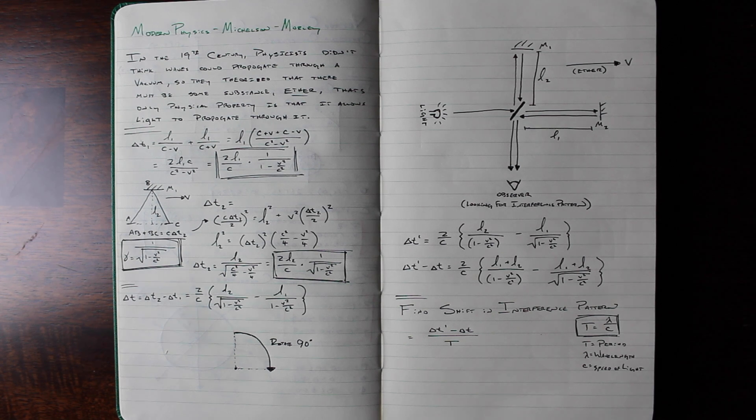Subtracting delta T from delta T prime and dividing by the period of light waves, a value can be found that describes the magnitude shift of the interference pattern that should be observed if we really are traveling through this luminiferous ether.